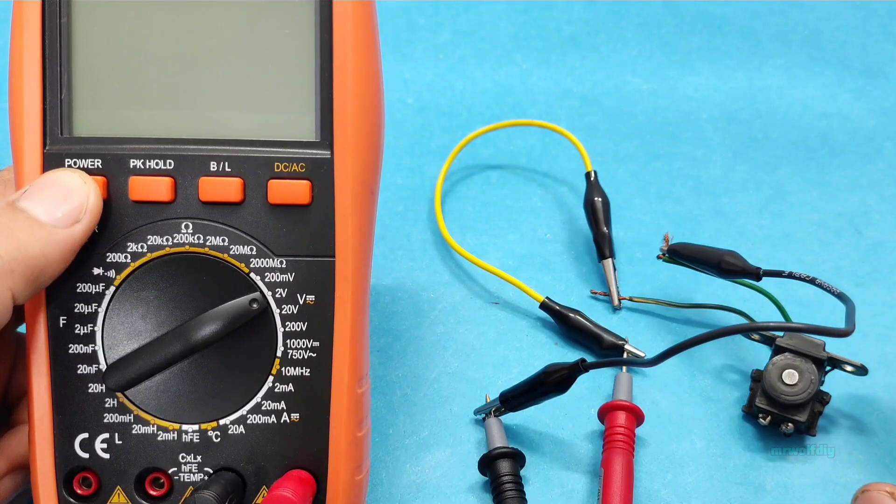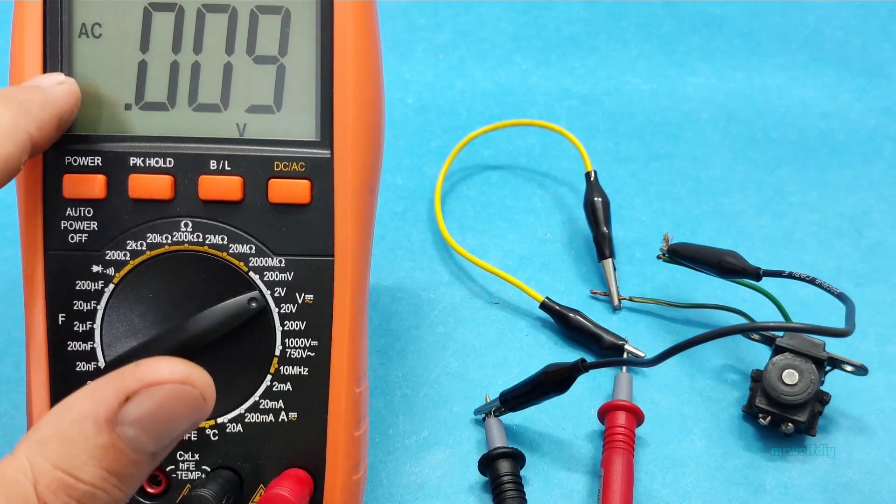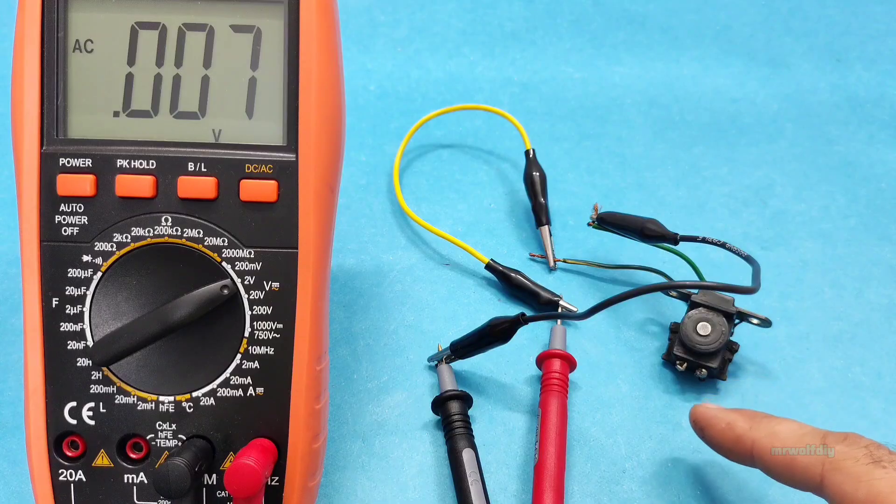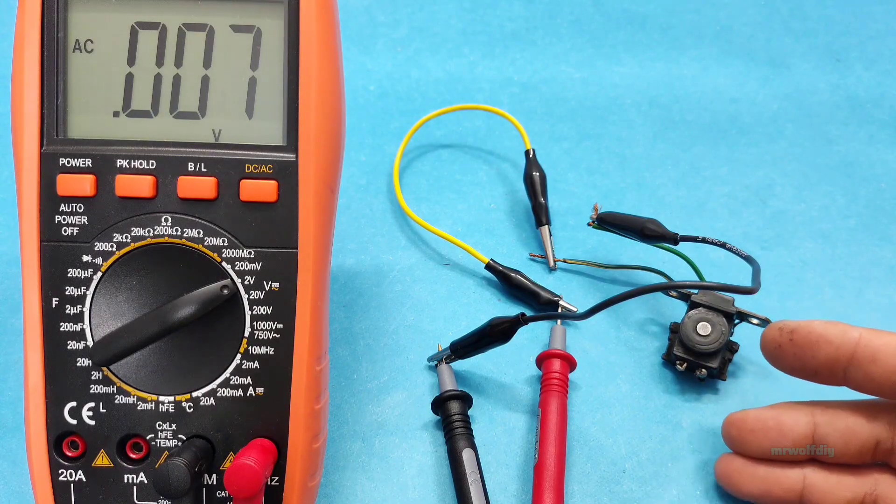Turn on the multimeter. AC voltage. Now, when the pickup is triggered, it should generate a small voltage.